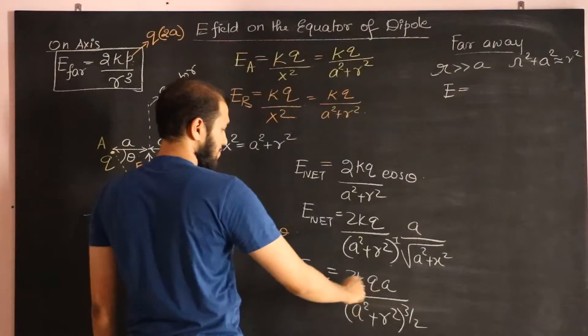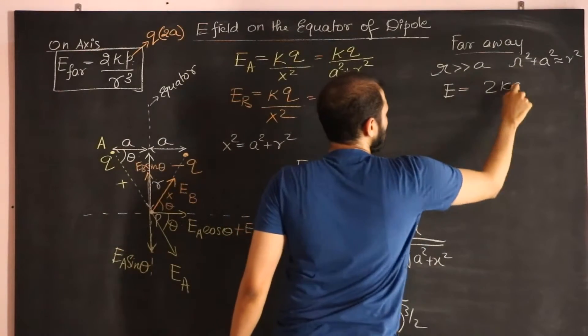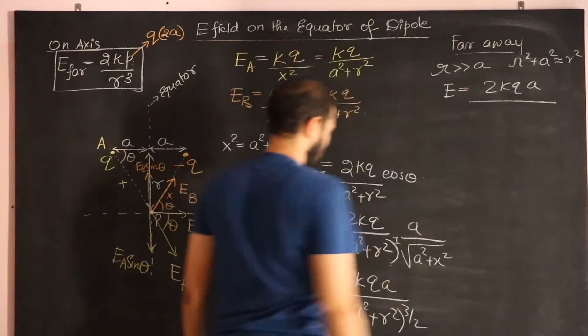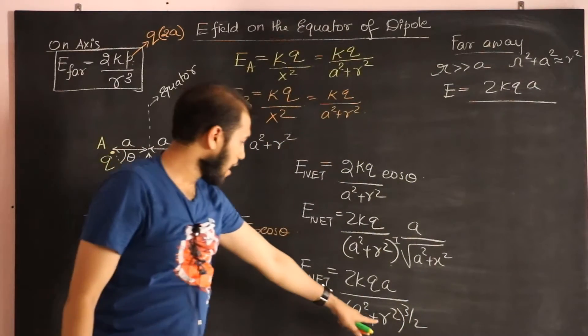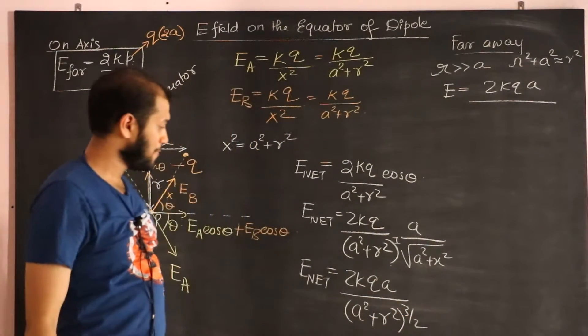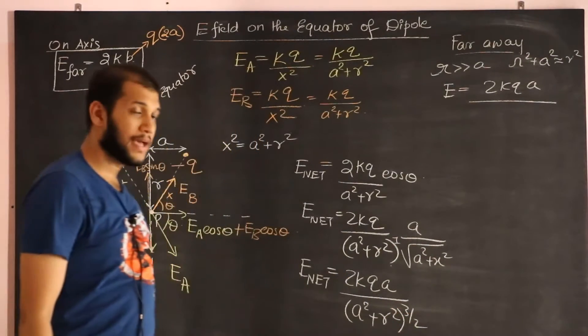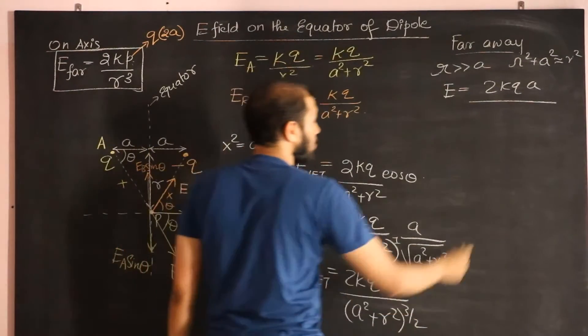In that case, we get the net field as 2KQA divided by R square to the power 3/2. But the square and the 1/2 cancels, and you end up with R to the power 3.